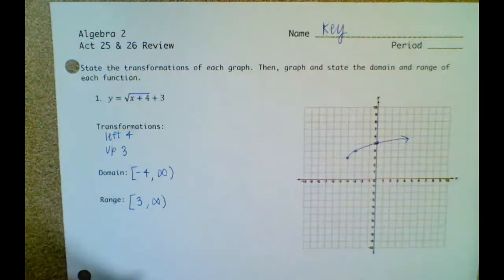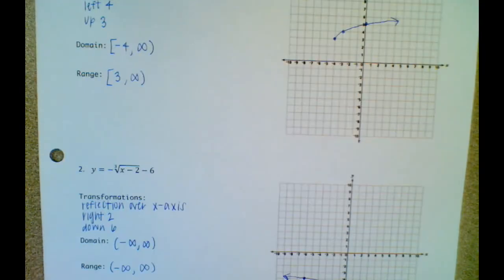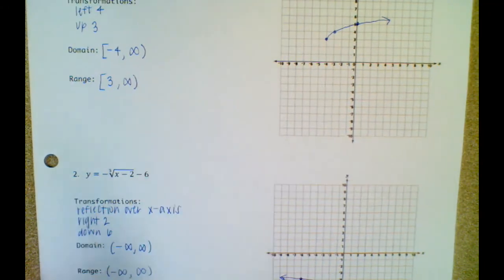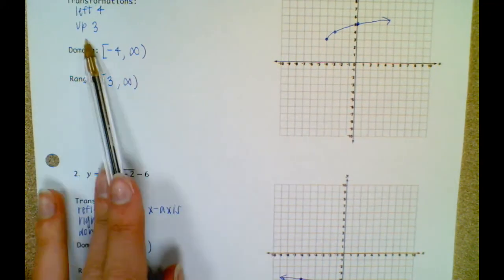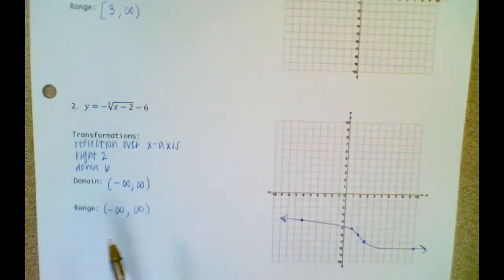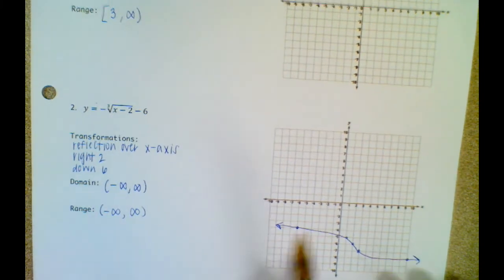That's just a little reminder. We're only using brackets for the square root functions. The cube root functions — this is always the domain and range of the cube root.